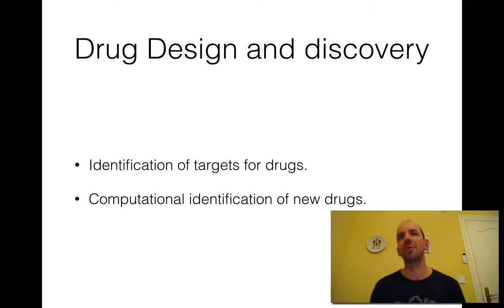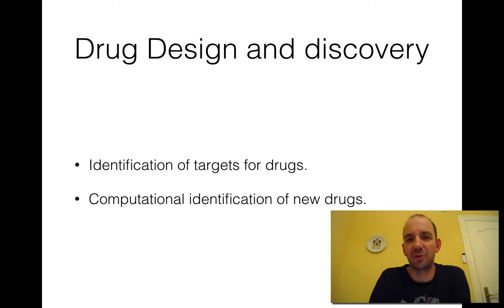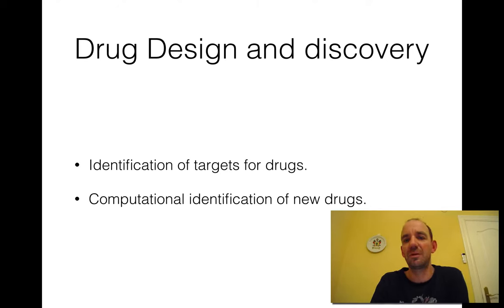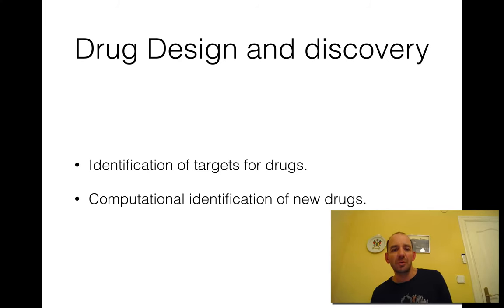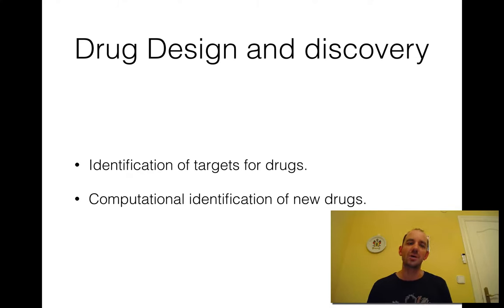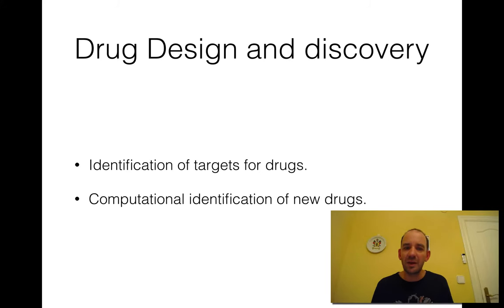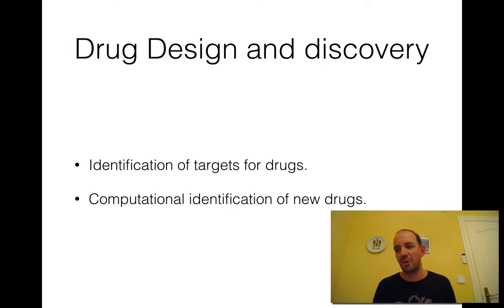Drug design and discovery is of course an important area of all medical and biological research — to get better treatments for diseases. One thing is to identify new targets for drugs. You might look for targets unique to bacteria: if you find a gene family unique to bacteria that doesn't exist in eukaryotes, that might be a good target for an antibiotic. Or you might find genes that are only expressed in cancer cells and say, let's knock this out.